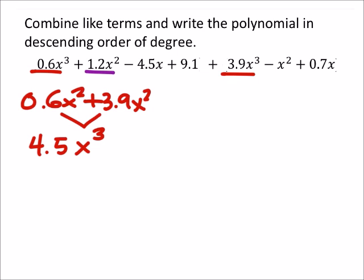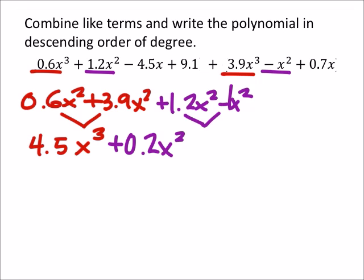All right, here we go then. I've got a positive 1.2 x squared, and then I've got this other minus x squared here. That would be a 1x squared if I need it. So this term will have an x squared still, but 1.2 minus 1 is, that'd be plus 0.2 x squared.